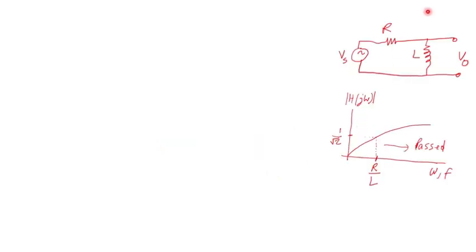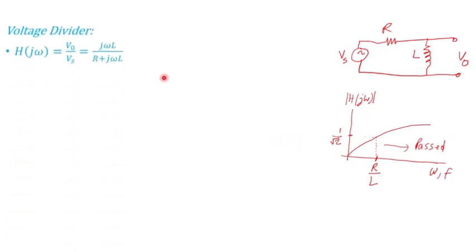Looking at this circuit, I have a source, a resistance, and an inductance. The input is VS and the output voltage is taken across the inductance. Using a voltage divider, the transfer function H in the frequency domain is H(jω) = jωL divided by R plus jωL.